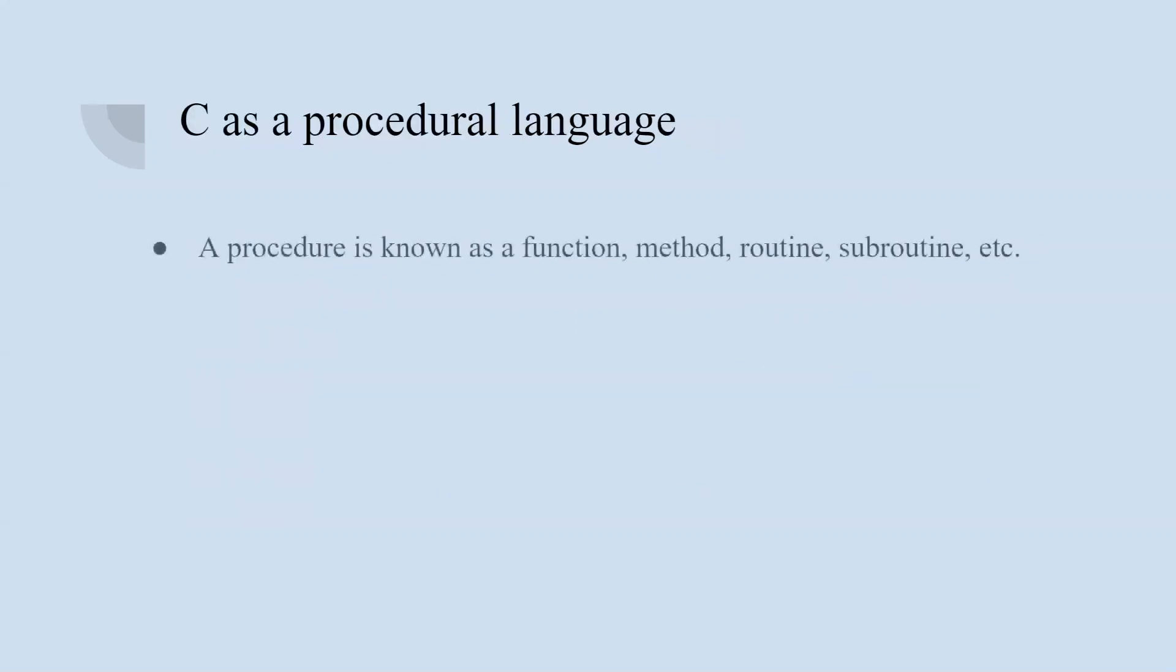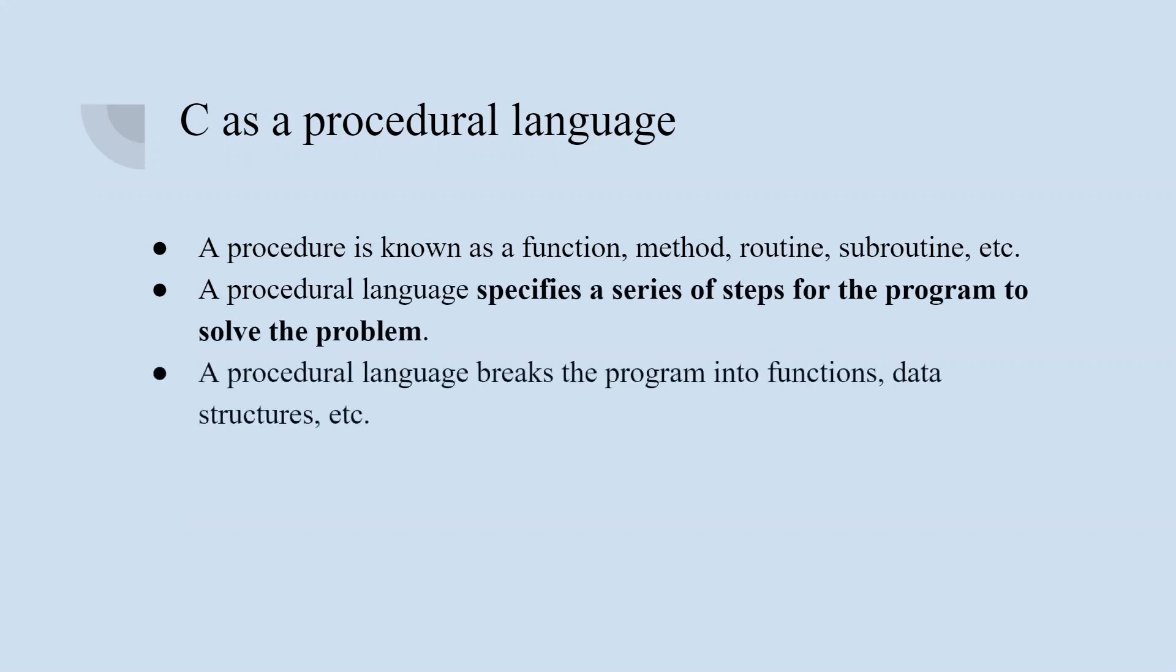Why is C known as procedural language? Because it uses procedures, which are known as functions, methods, subroutines, and procedures. It follows specific steps of a program to solve a problem and breaks the program into functions or data structures.